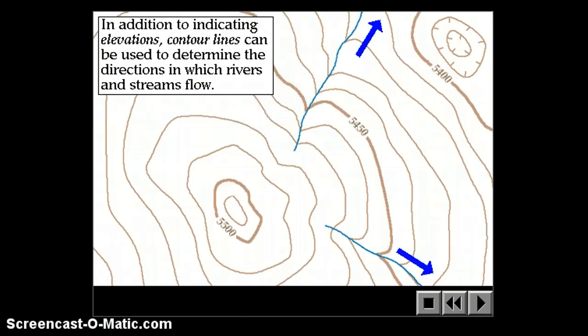In addition to indicating elevations, contour lines can be used to determine the direction in which rivers and streams flow. I was just talking about that. The V's point upstream. So those are the basic ideas of contour lines.